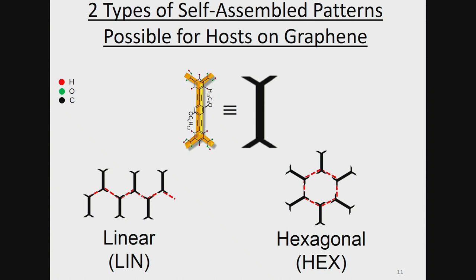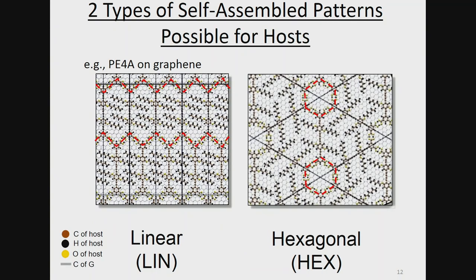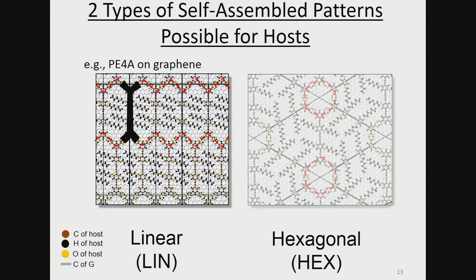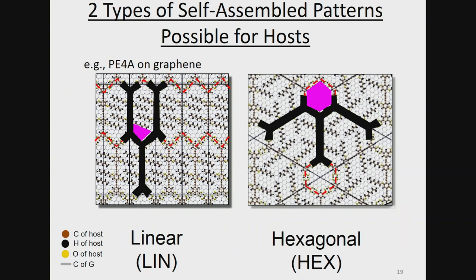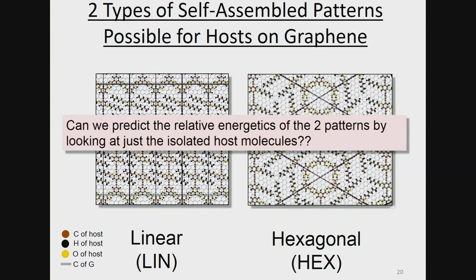The host molecules self-assemble into architectures by forming hydrogen bonds between the COOH groups at the termini. From experiment we know they can form in two kinds of patterns: either linear or hexagonal. In the atomistic picture the red lines show how the hydrogen bonds are arranged — this is one molecule, then the next, then the next, giving the linear pattern; and similarly for the hexagonal pattern. In both patterns there are cavities inside which guest molecules can fit. The question I'm asking is: can I predict the relative energetics of the two patterns by looking in some way at just the isolated host molecule?